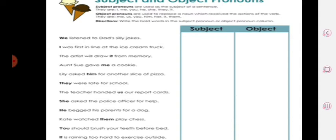The artist will draw it from memory—so 'draw' is the verb and after it is the pronoun 'it.' So this is an object pronoun.